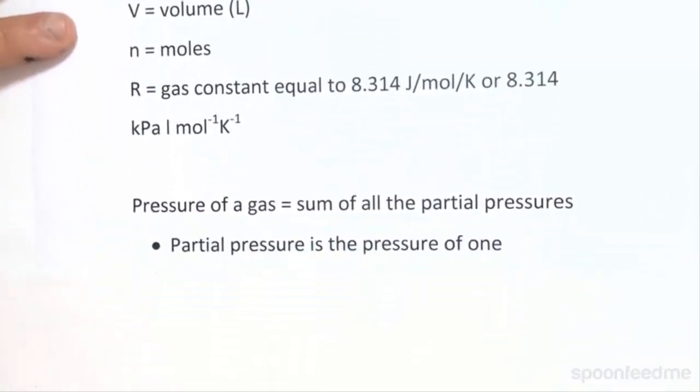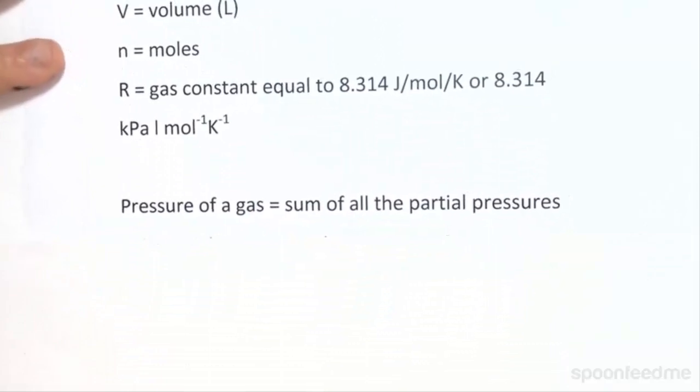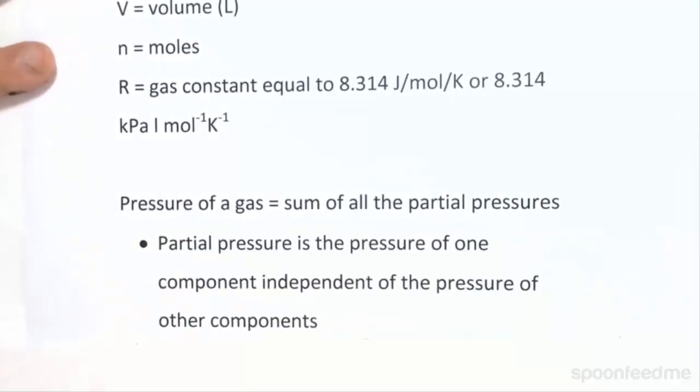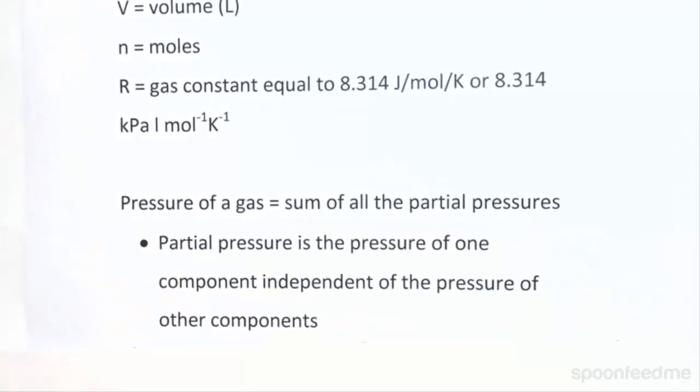Another point to note is that the pressure of a gas is equal to the sum of all the partial pressures. So this is where the partial pressures, the partial pressure is the pressure of one component independent of the pressure of other components. So if we have a mixture of gases at different pressures, the total pressure of the system will be equal to the sum of all the pressures.